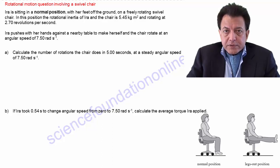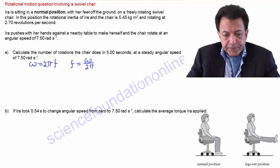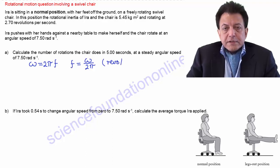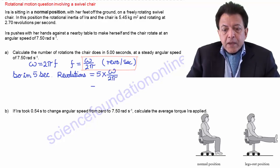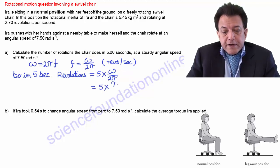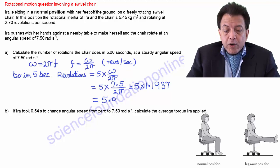We do this by using the fact that angular speed omega is equal to 2 pi times the frequency of revolution f, rearranged as f equals omega divided by 2 pi. Frequency f is the number of revolutions in 1 second. So in 5 seconds, the number of revolutions will be 5 times omega divided by 2 pi. This becomes 5 times 7.5 divided by 2 pi, which gives 5 times 1.1937, working out to be 5.97.